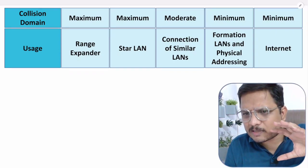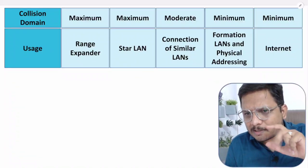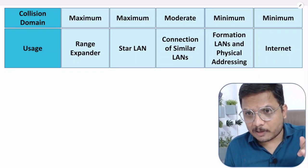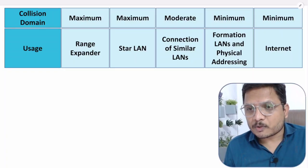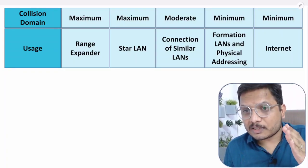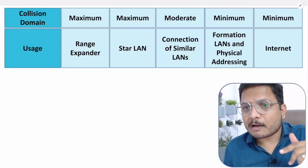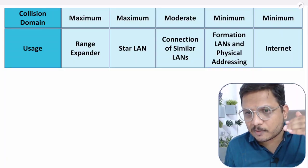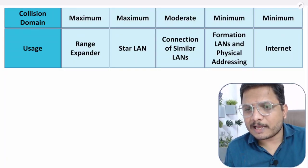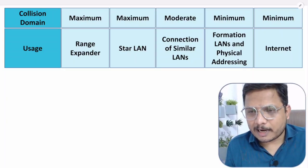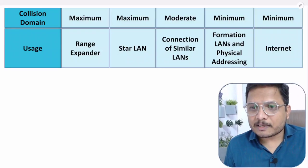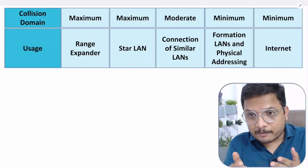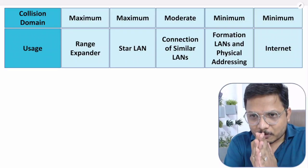I'll explain router IP routing in greater detail in another video. One more thing to add is cost — router and switch are costlier devices compared to repeater, hub, and bridge, which you can verify in any online store. This is all about the comparison of network devices. I hope you have understood this. If you have anything to share, please note it down in the comment section. Thank you so much for watching this video.